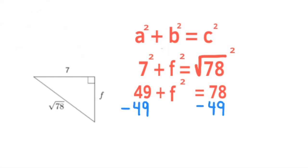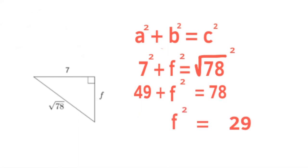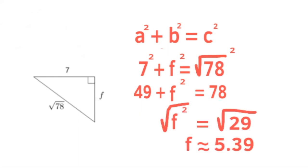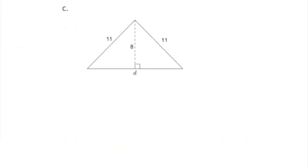Since we're solving for f, we subtract 49 from both sides of the equal sign. That leaves f squared equals 29. The square root of 29 is approximately 5.39, but to the nearest tenth that would be approximately 5.4.